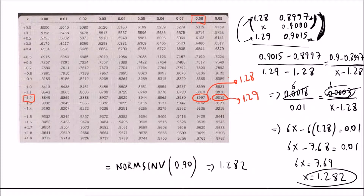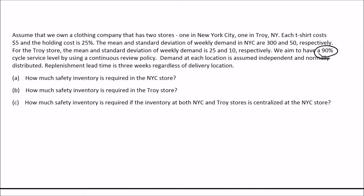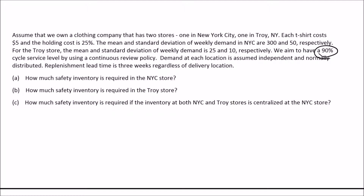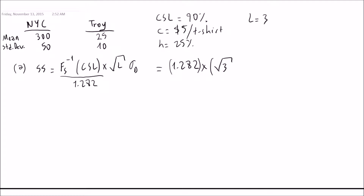Going back to Part A: now that we have Z = 1.282, the safety stock for New York City is SS = 1.282 × √3 × 50. The replenishment lead time L = 3 weeks and the standard deviation for NYC is 50. This value equals 111.0 t-shirts. So the safety stock for the New York City store is 111.0 t-shirts.